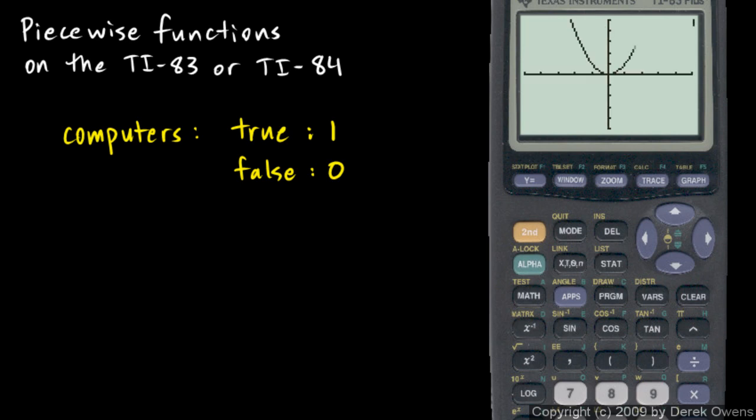I hit graph, and here we go. There's a parabola, and it stops at x equals 2. And then it picks up with the line, right there. And that's it. That's a piecewise function graph. And you could trace, and you could trace around on that, and see different x values and different y values along the curve. You might need to switch between y1 and y2 with the up and down arrow keys.